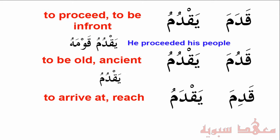For the intransitive verb, there is only a fa'il, which is the dhammin mustatir. Yaqdumu: he is becoming old or ancient. This verb is rarely used. What is used, however, is the sifah mushabbah qadeem, which describes something that is old or ancient. Notice that the present tense forms are the same for these two verb categories — we distinguish them based on context: one takes an object, and the other does not because it is intransitive.